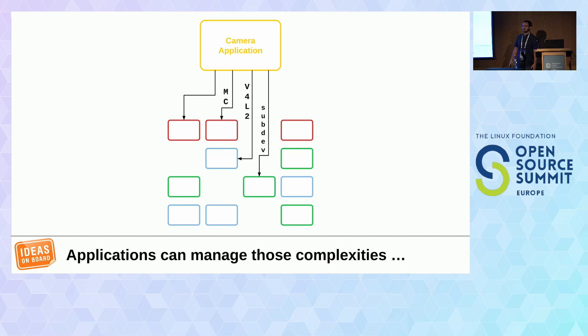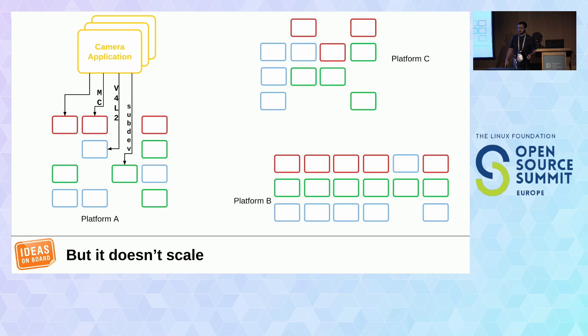Imagine if your application had to open up 96 /dev/video nodes to operate the camera — it's impractical. Applications can choose to manage all that themselves using the media controller system, opening sub-devices and configuring them. But it doesn't scale — they have to have manual configuration for each platform, and that support only works for their own application. On that device you can't then do a web call or connect GStreamer.